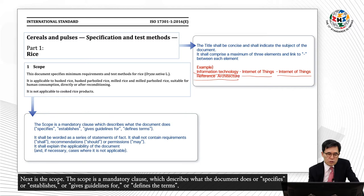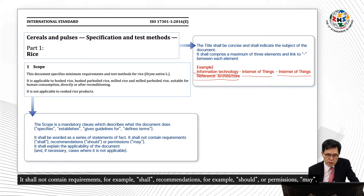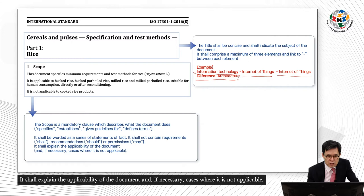Next is the scope. The scope is a mandatory clause which describes what the document does, or specifies, or establishes, or gives guidelines for, or defines the terms. It shall be worded as a series of statements of fact. It shall not contain requirements — for example, 'shall' — or recommendations — for example, 'should' — or permissions — 'may'. It shall explain the applicability of the document, and if necessary, cases where it is not applicable.